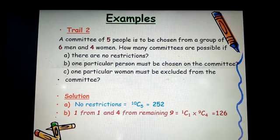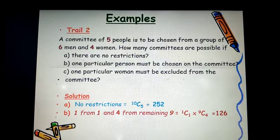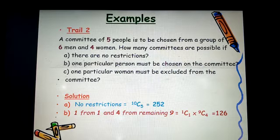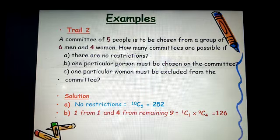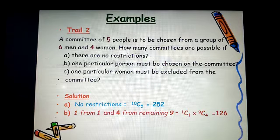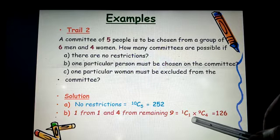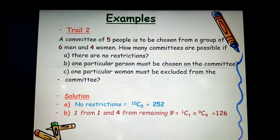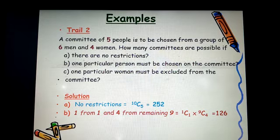Part B. One particular person must be chosen on the committee. So, you separate that one particular person from the remaining 9. You are selecting 1 from one particular person. That is 1 combination 1. And the remaining 4, you are selecting from the other 9 left. So, that gives us 9 combination 4. So, 1 combination 1 times 9 combination 4. That gives us 126.